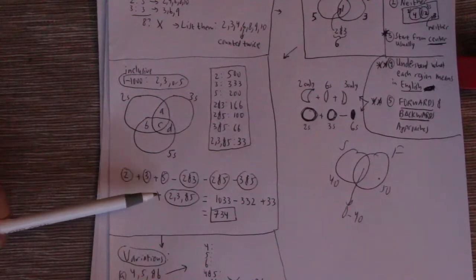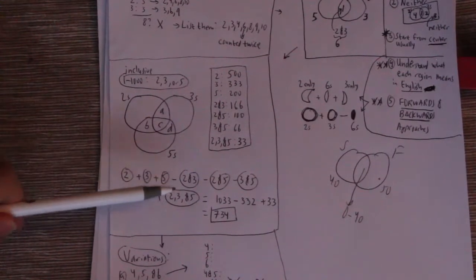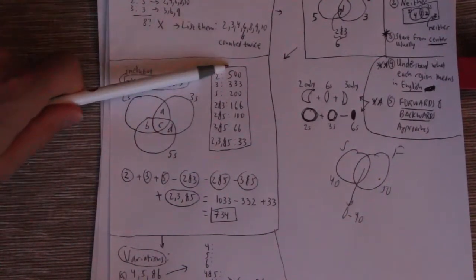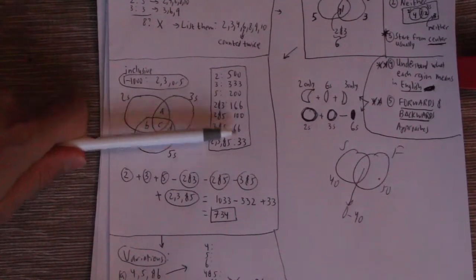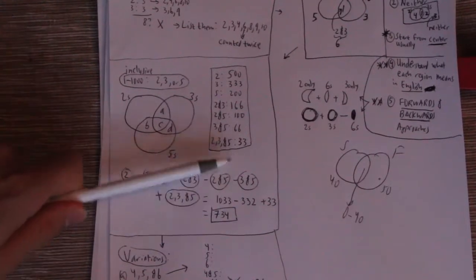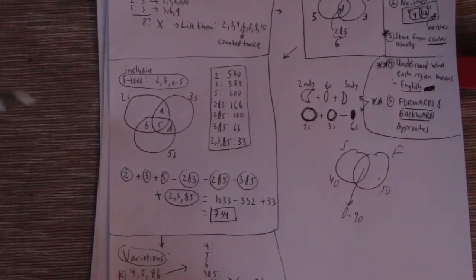So now that's why we have to add the two, three, and five region, which is region C. That's what we have to add it back in. So the sum of the first three numbers is 1033. The sum of the next three, which we're going to subtract, is 332. And then we add in that 33, and we get 734. So that's how you do this problem.